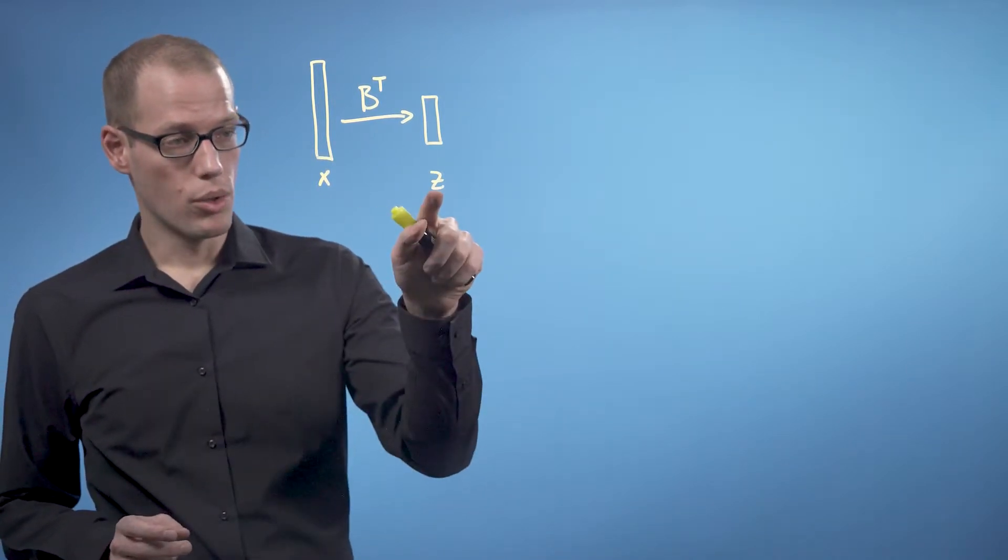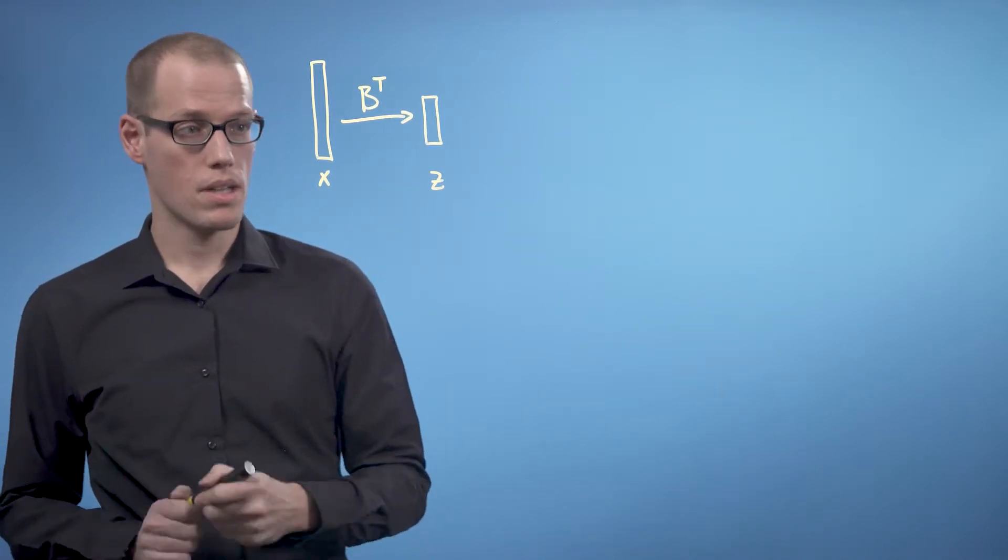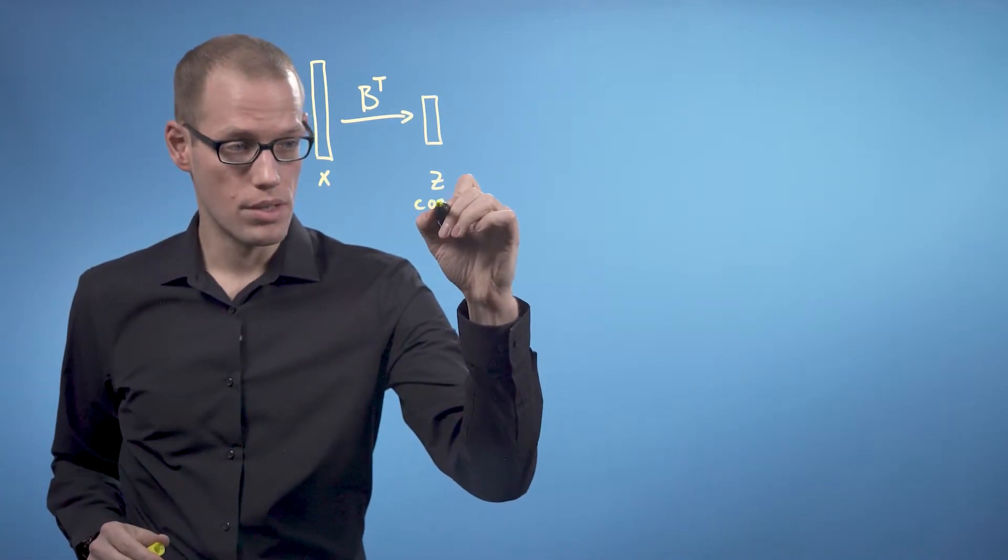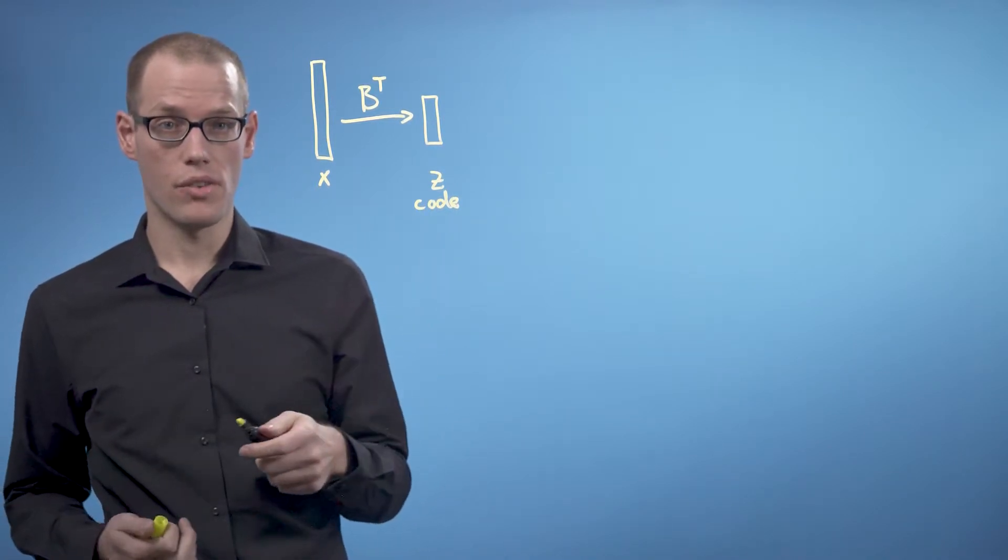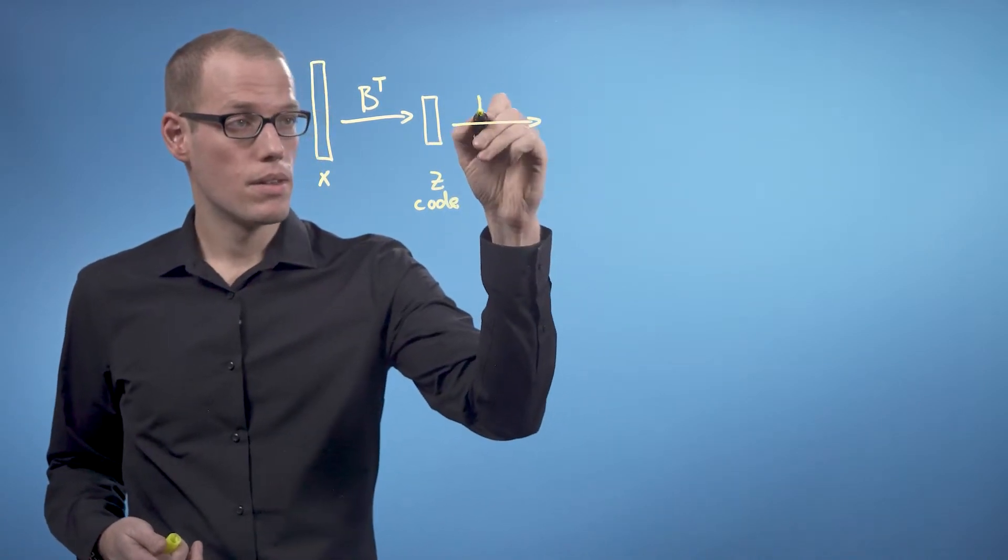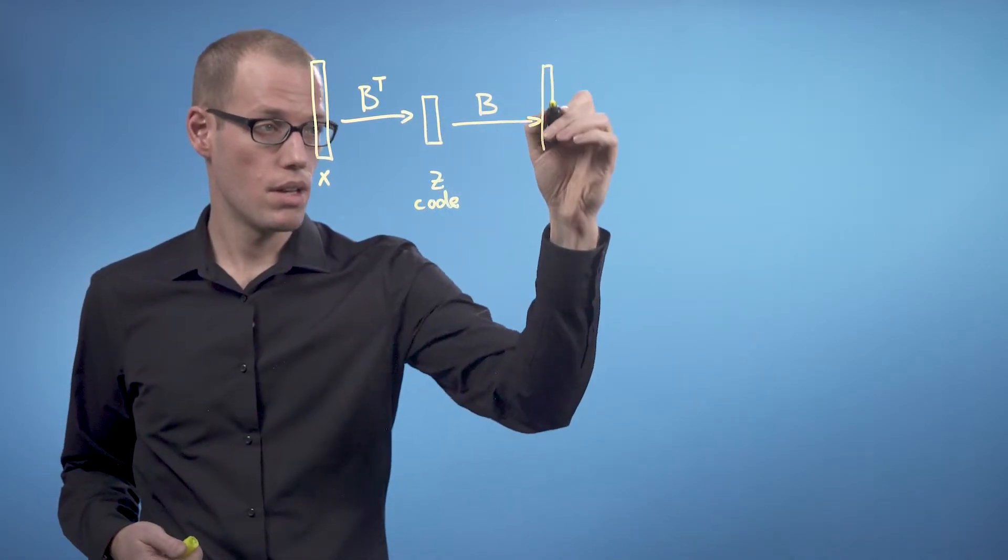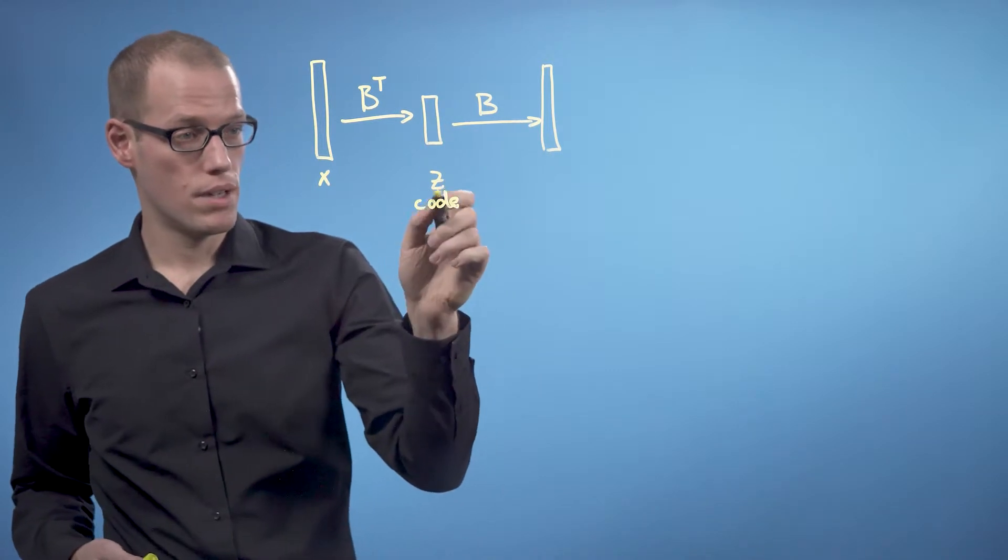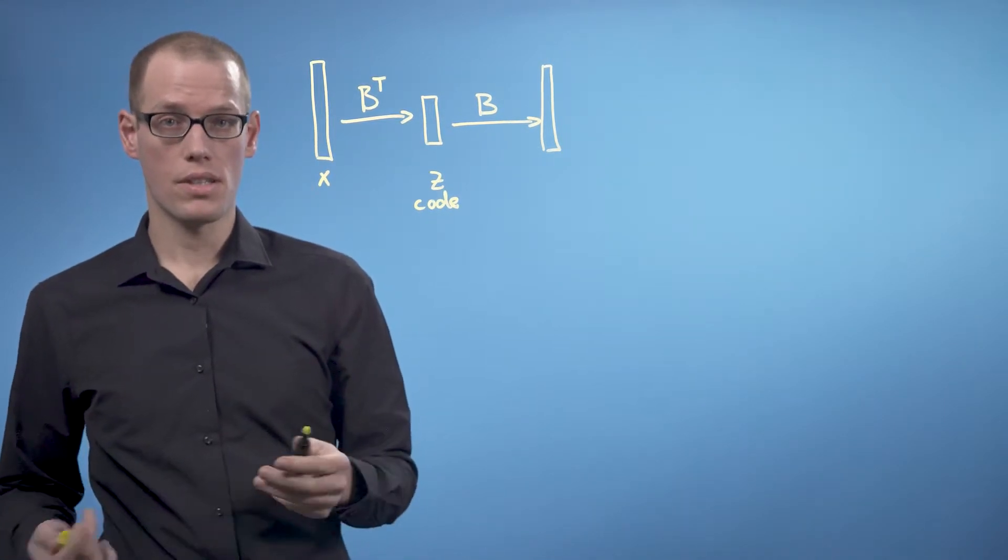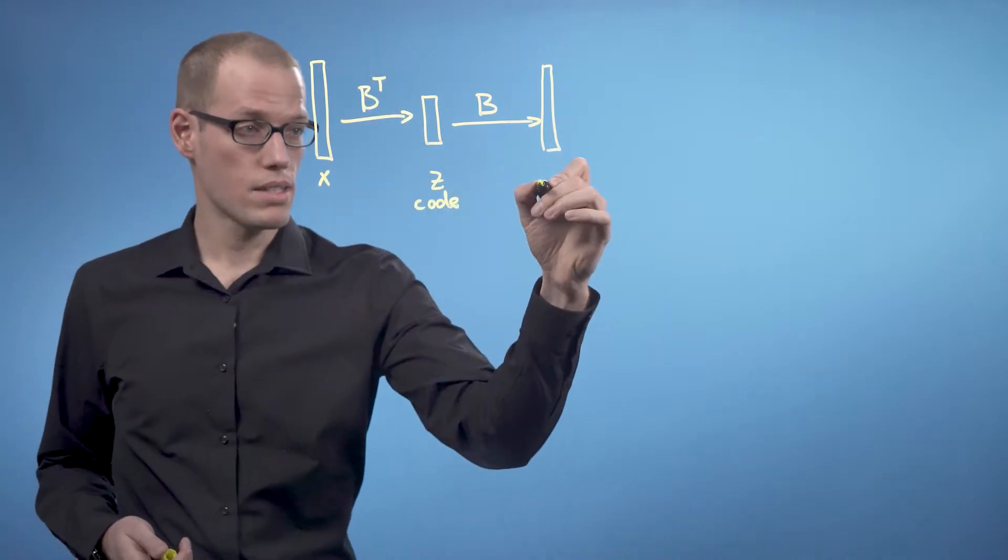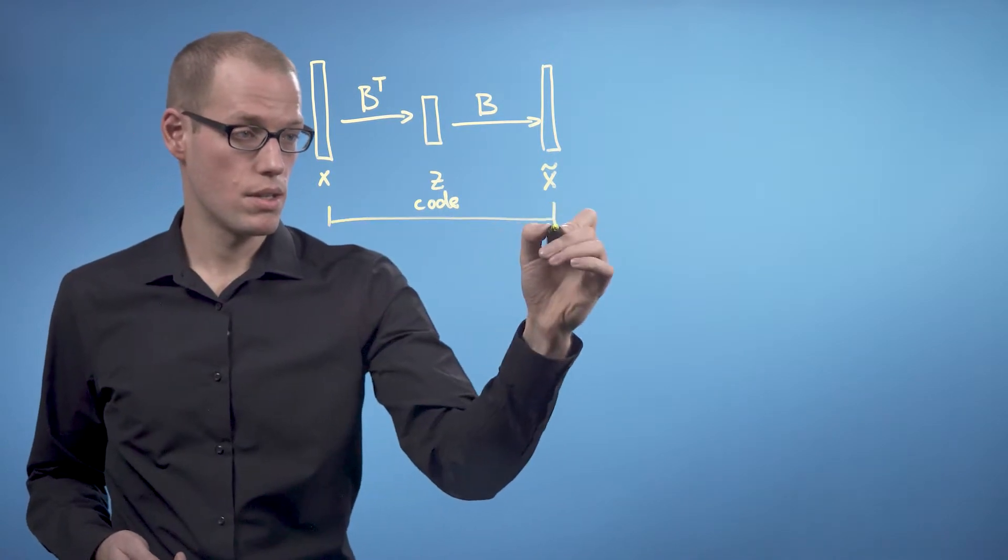The z values are the coordinates of our data point with respect to the basis vectors which span the principal subspace, and that is also called the code of our data point. Once we have that low dimensional representation z, we can get a higher dimensional version of it by using the matrix B again, multiplying B onto z to get a higher dimensional version of z in the original data space. We found the PCA parameters such that the reconstruction error between x and the reconstruction x tilde is minimized.